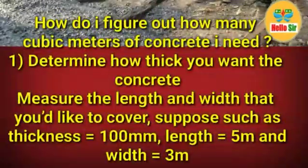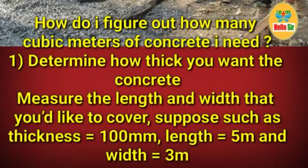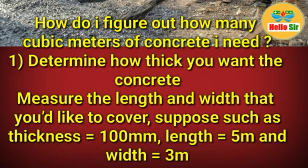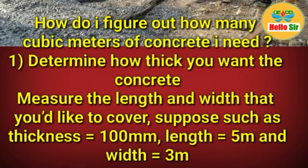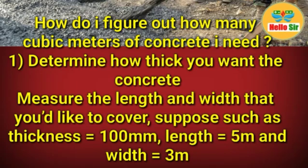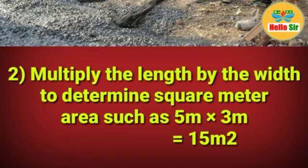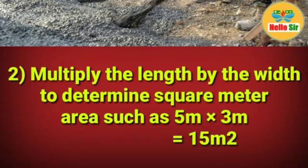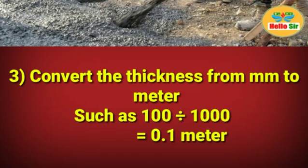How do you figure out how many cubic meters of concrete you need? First, determine how thick you want the concrete. Measure the length and width that you would like to cover — for example, thickness 100mm, length 5 meters, and width 3 meters. Then multiply the length by the width to determine the square meter area: 5 meters by 3 meters equals 15 square meters.